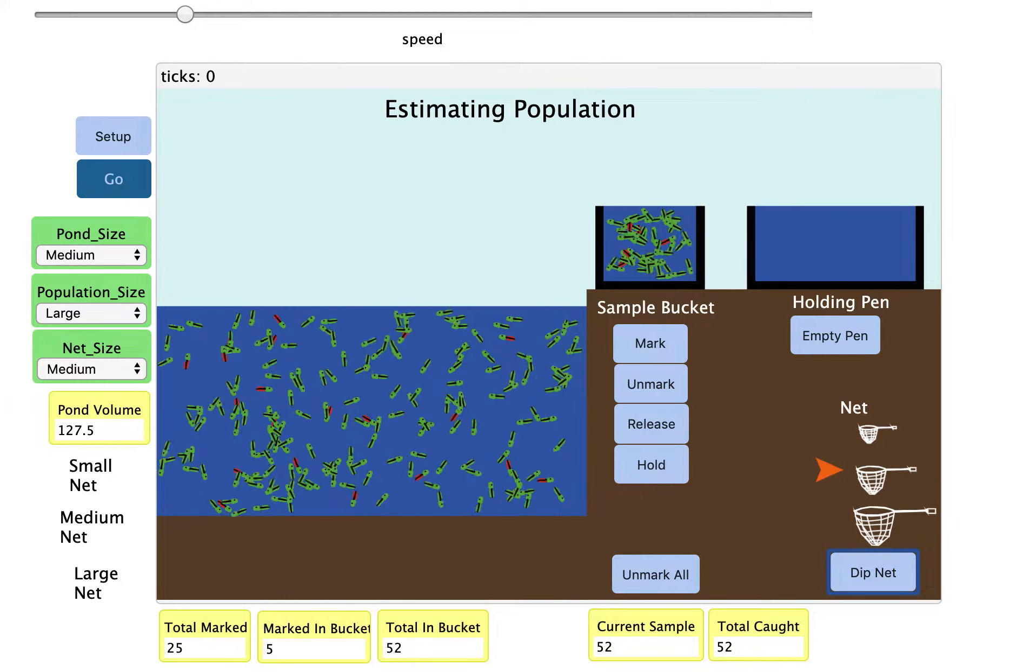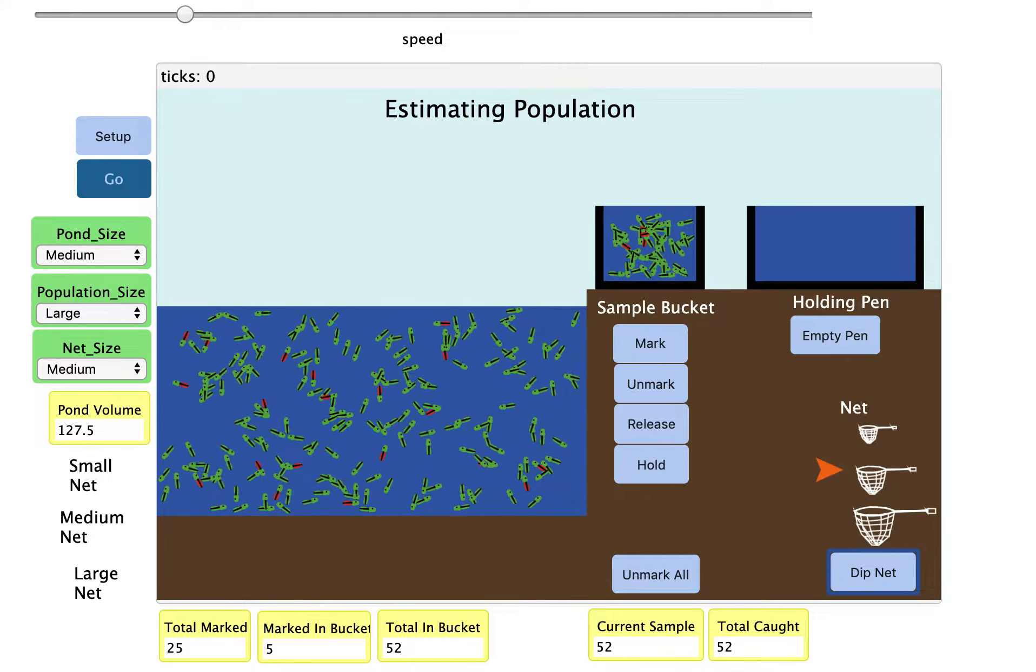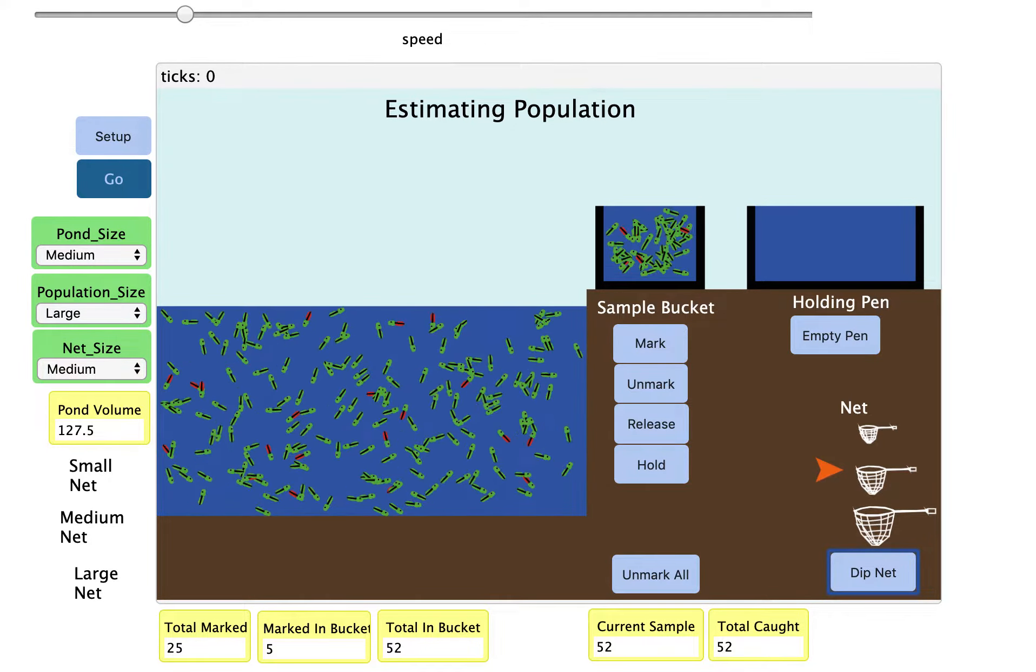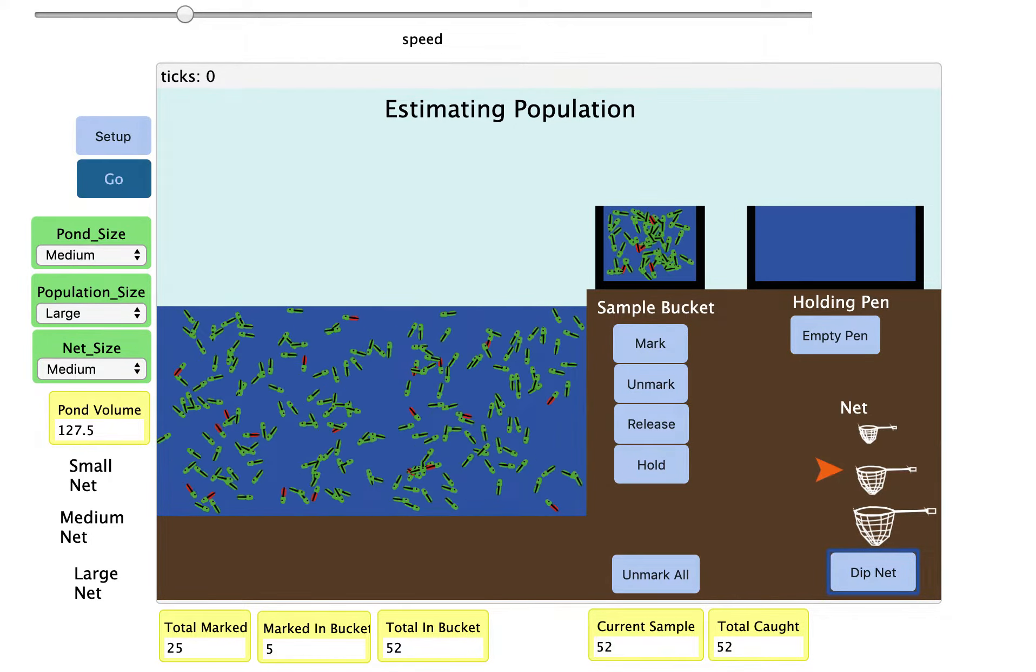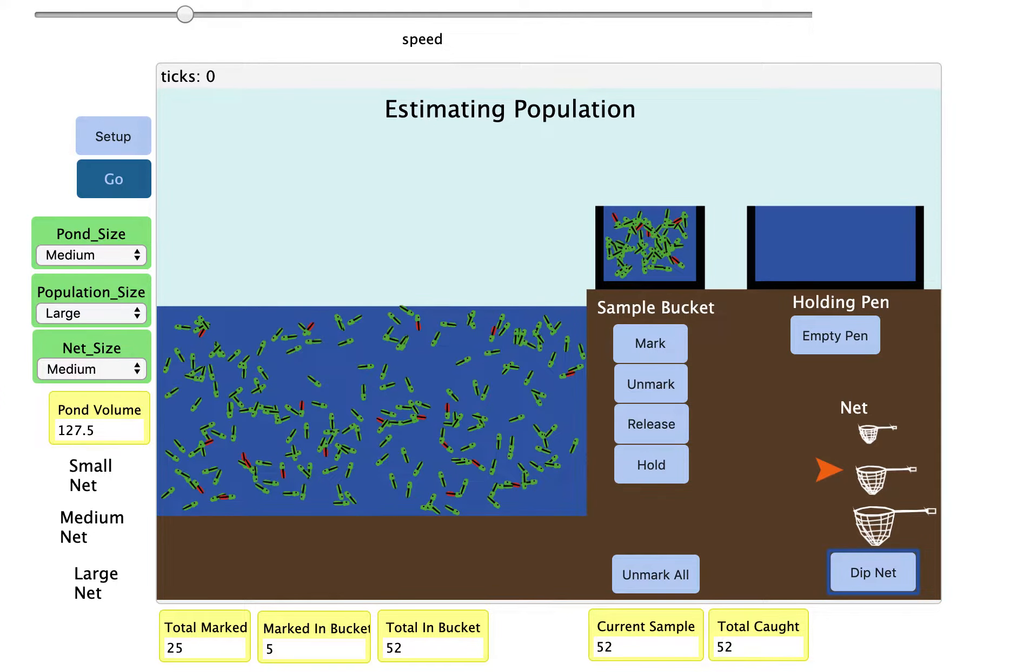We're going to keep doing that process six times for six different sample sizes, and we're going to get different estimations for the number of fish in the tank.